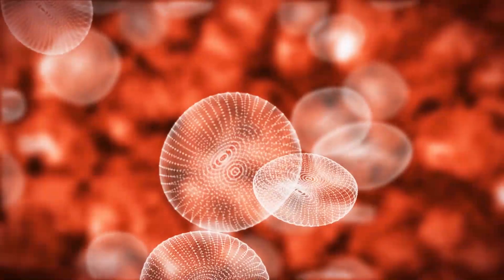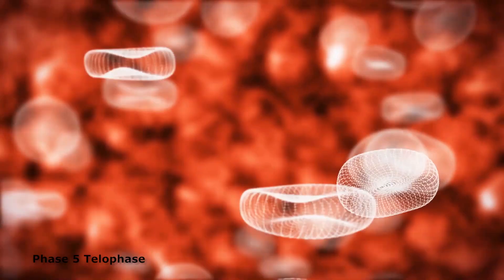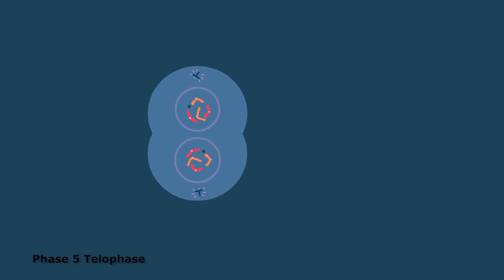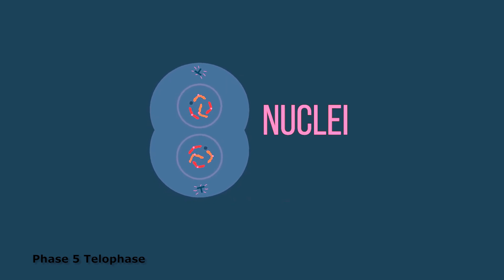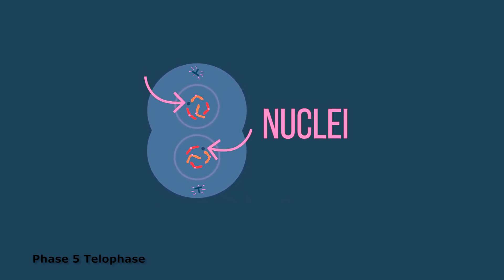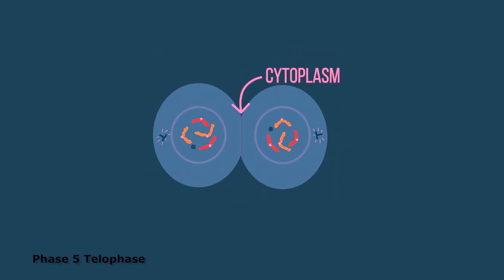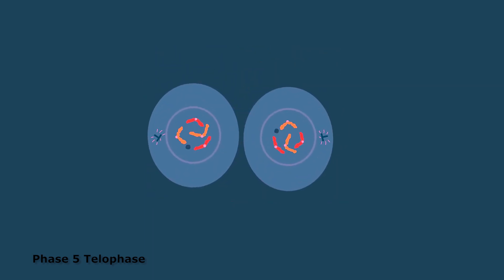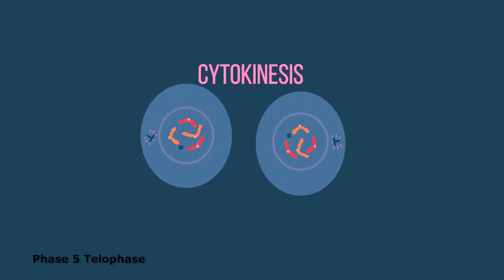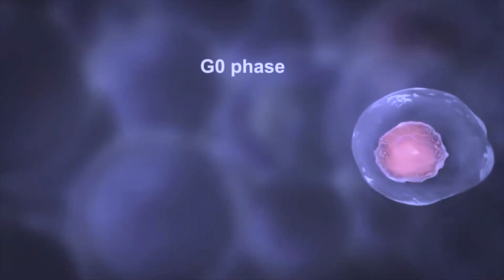The fifth and final phase of mitosis is telophase. During telophase, the nuclear envelope reforms, and two nuclei form within the cell. Then the cell separates into two cells during a process known as cytokinesis.